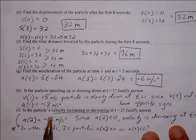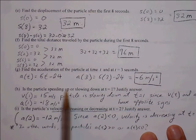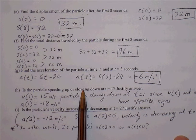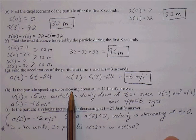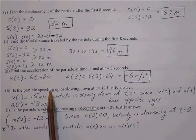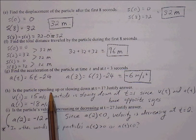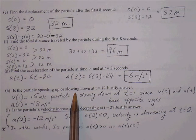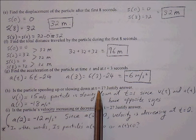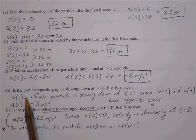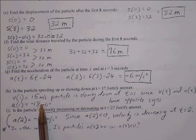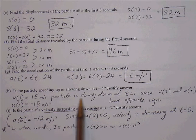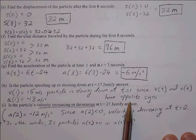Is the particle speeding up or slowing down? To determine this, we look at the signs of both velocity and acceleration. When they have the same sign, the particle speeds up; when they have opposite signs, it slows down. At t=1: velocity is positive 15 meters per second and acceleration is negative 18 meters per second squared. Since the signs differ, the particle is slowing down.